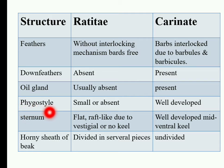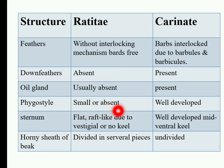Next is the pygostyle, which refers to the posterior parts of the vertebral column present in the tail region of birds. In Ratites birds, the pygostyle is small or absent.